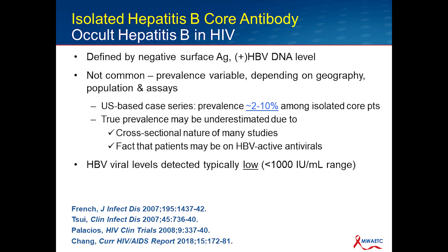When patients weren't on these antivirals and occult hepatitis B was found, the viral levels detected were typically in the low range — less than 1,000 IU per mL. The bottom line is that the clinical significance and true extent of occult hepatitis B is not clear based on the literature. But the answer to the question 'how worried should I be for occult hepatitis B in isolated core patients' is generally: don't worry.